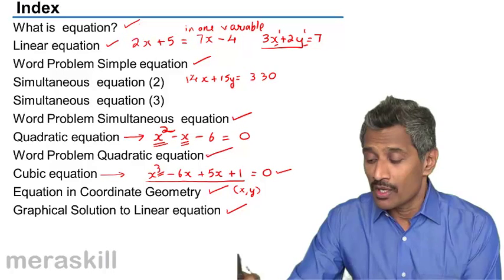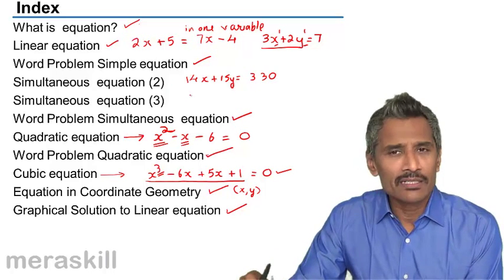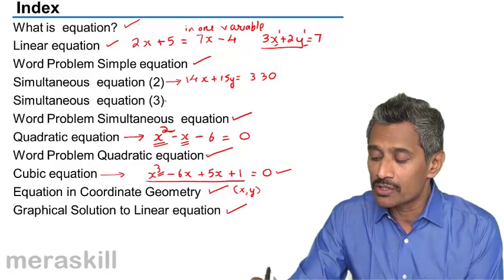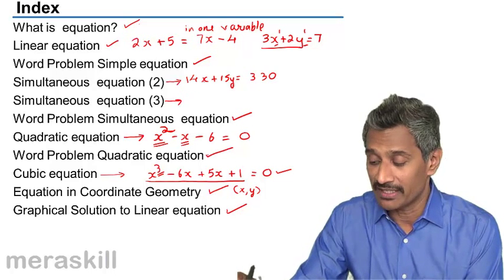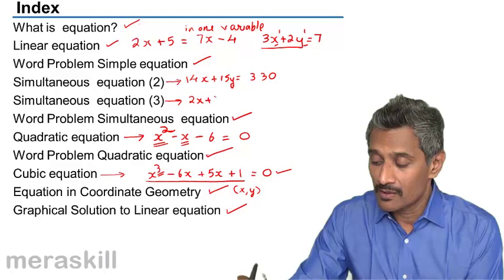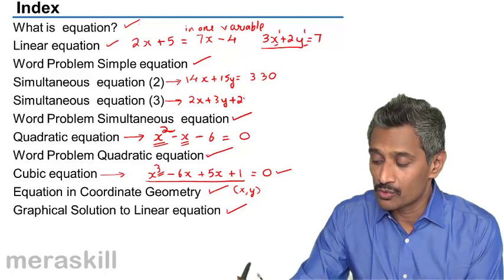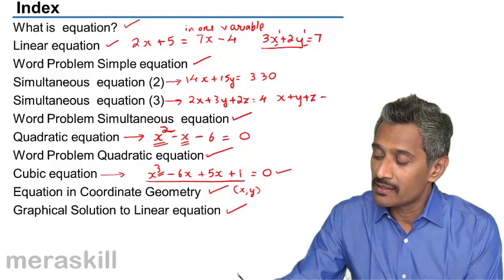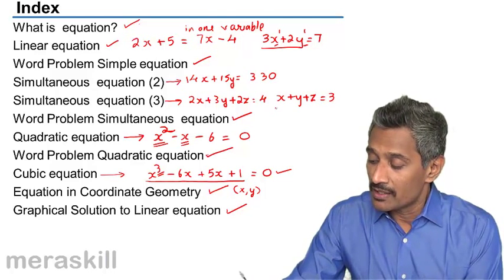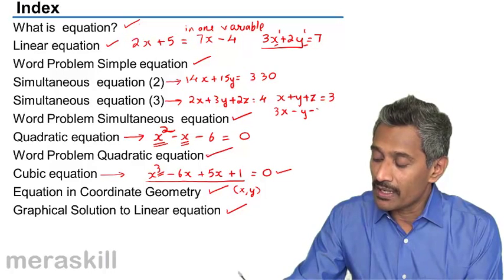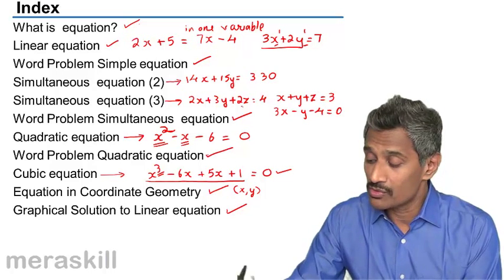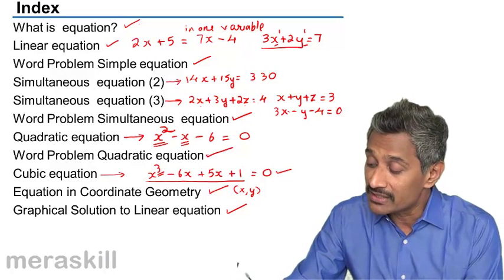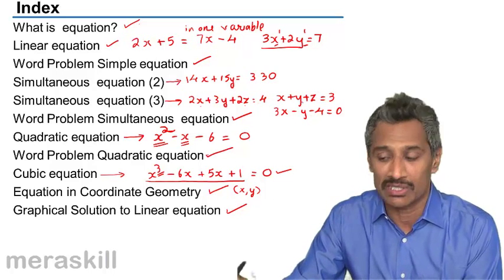So now of course, let us go back just a little bit over there. I did mention about simultaneous equation in two variables. We also have simultaneous equations in three variables, say 2x plus 3y plus 2z is equal to, say, 4x plus y plus z is equal to 3, 3x minus y minus 4 is equal to 0. So we have three equations over here. Since there are three variables, we need three equations to solve them simultaneously.